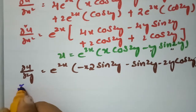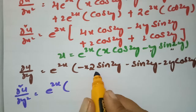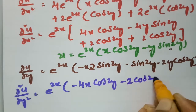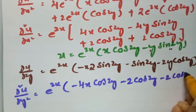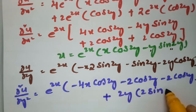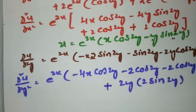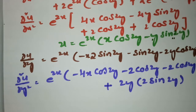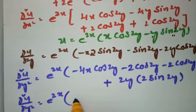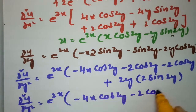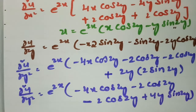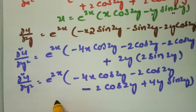Differentiating again with respect to y for ∂²u/∂y²: e^(2x) times [−4x·cos2y − 2cos2y − 2cos2y + 4y·sin2y]. So ∂²u/∂y² = e^(2x)(−4x·cos2y − 2cos2y − 2cos2y + 4y·sin2y).